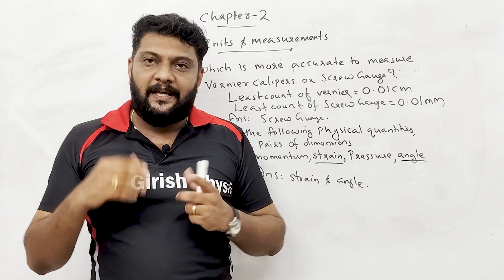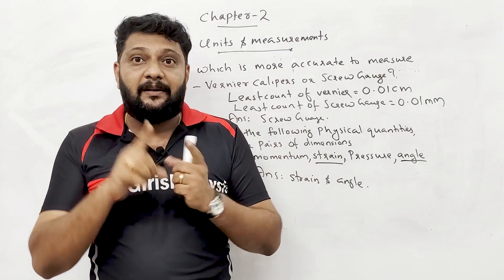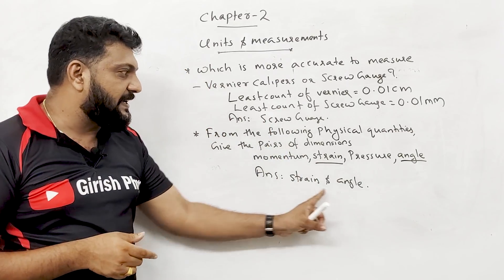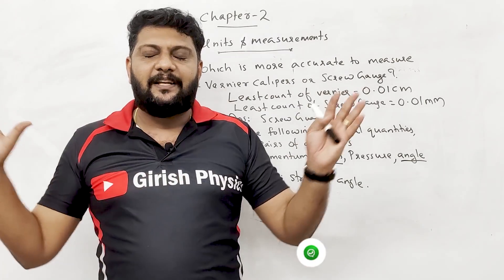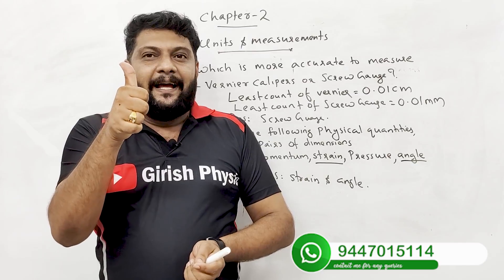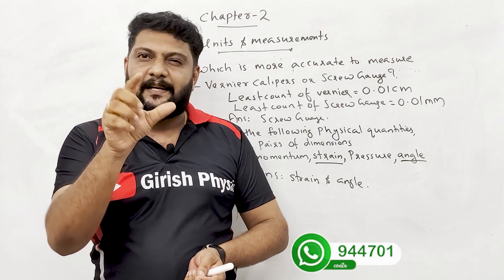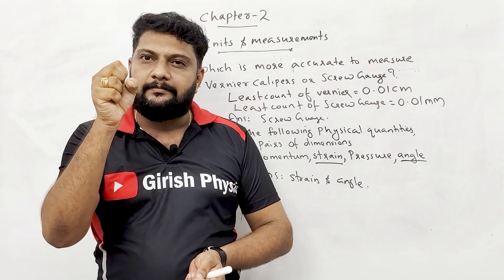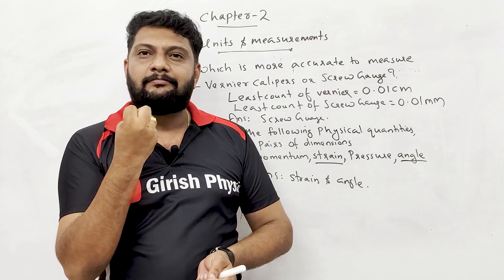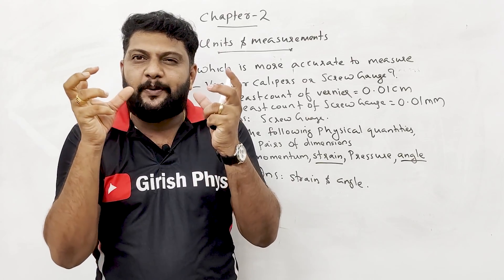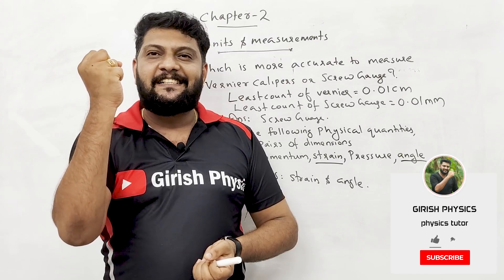Speed and velocity both have the dimension L·T⁻¹, so they also form a pair with the same dimensions. These are the important pairs to remember for the exam.